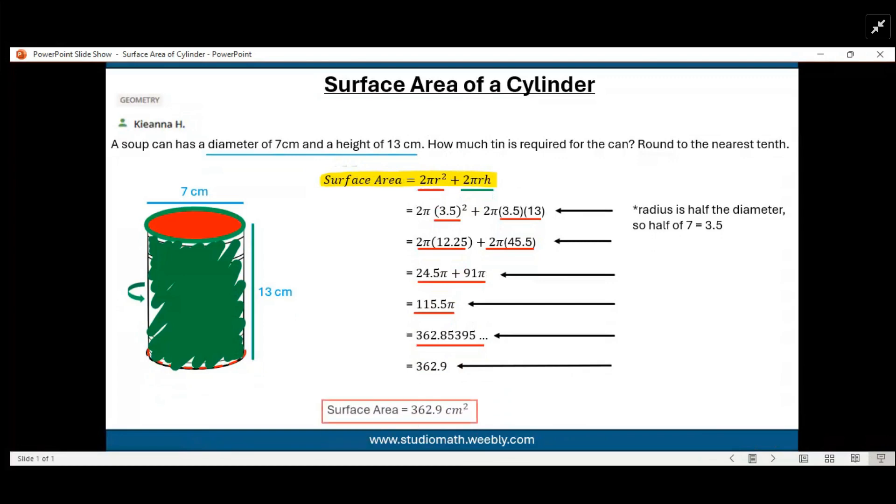And finally, our answer is surface area equals 362.9 centimeters squared. That is how much space the tin used for the can is taking up. If you found this video helpful, comment below if you want to see any more.